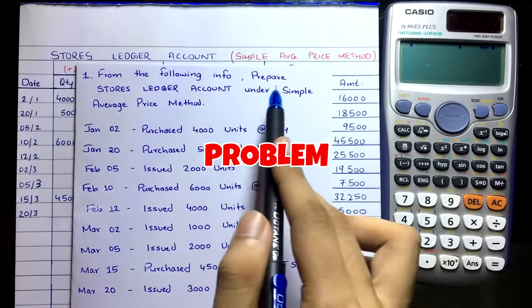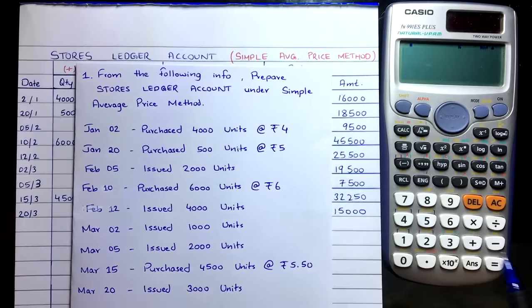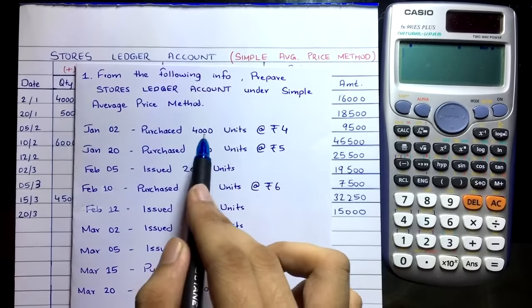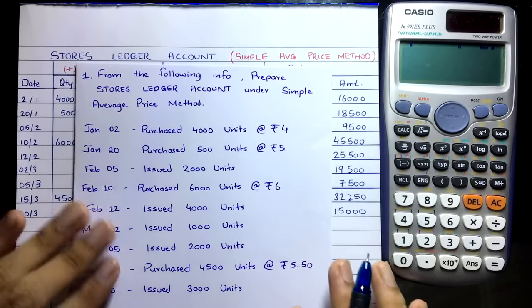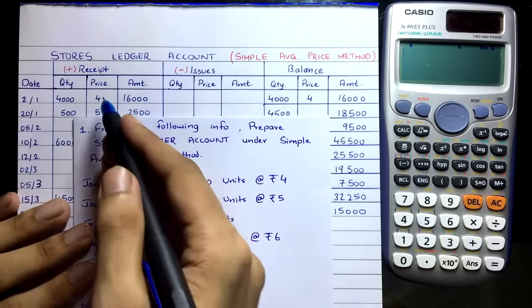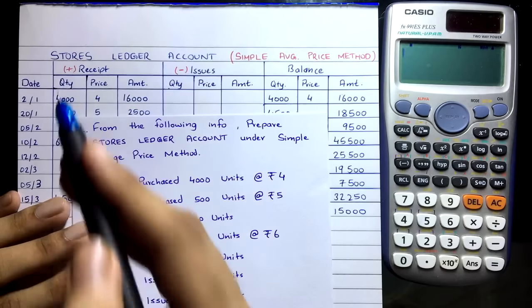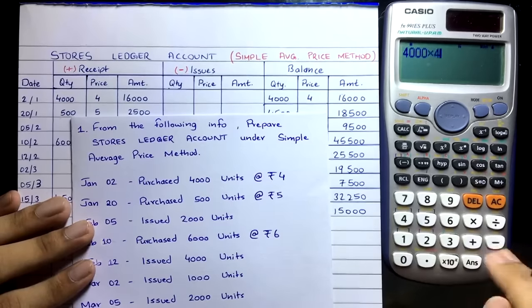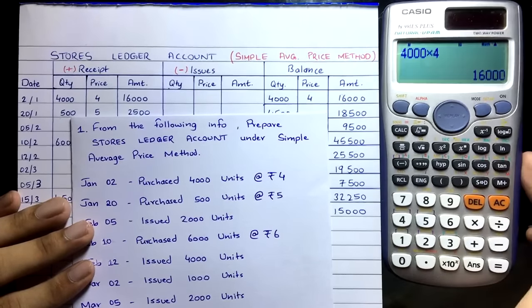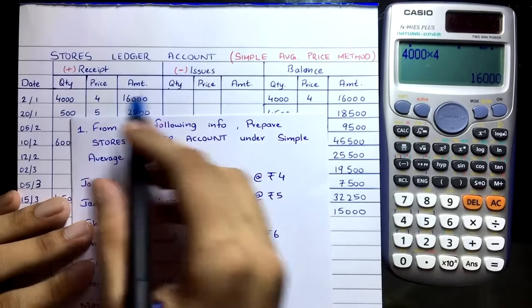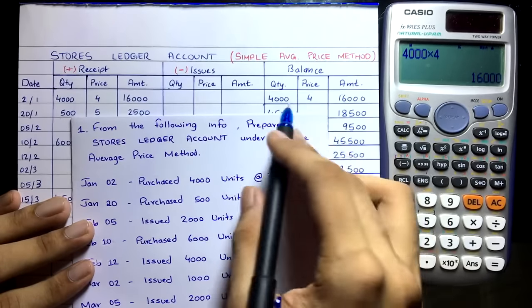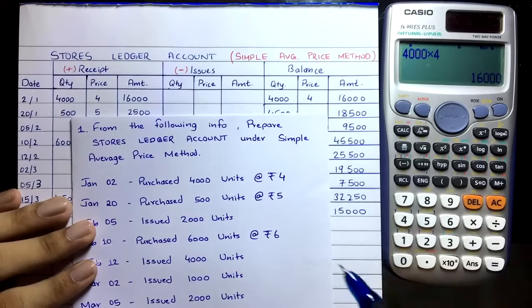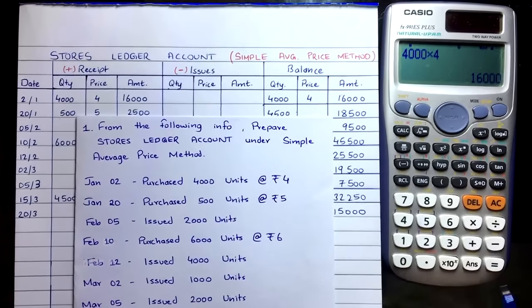From the following information, prepare a stores ledger account under the Simple Average Price Method. The first transaction: on 2nd January, purchased 4000 units at ₹4. You have purchased materials so you receive them at the warehouse — take that in the receipt column. 4000 quantity × ₹4 = ₹16,000. Copy that down in the balance column: we have 4000 quantity of ₹16,000 cost.